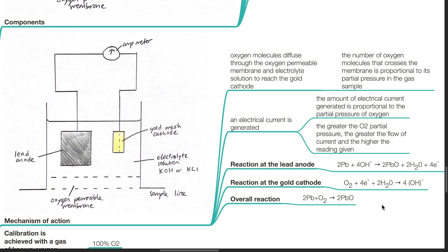Mechanism of action of the fuel cell: oxygen molecules diffuse through the oxygen-permeable membrane and electrolyte solution to reach the gold cathode. The number of oxygen molecules that cross the membrane is proportional to its partial pressure in the gas sample. An electrical current is generated, and the amount of electrical current generated is proportional to the partial pressure of oxygen. The greater the oxygen partial pressure, the greater the flow of current and the greater the reading given.